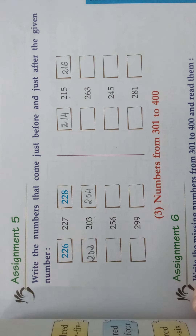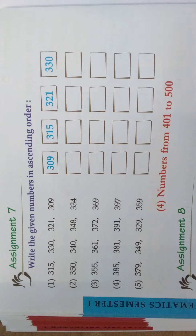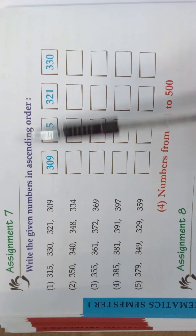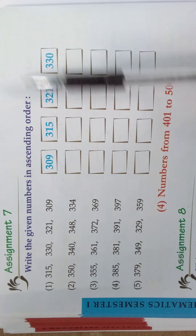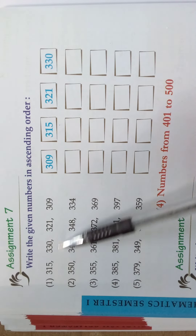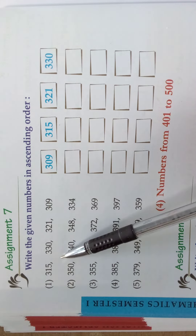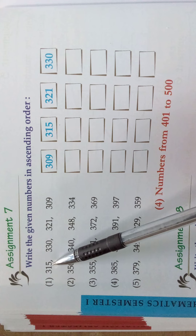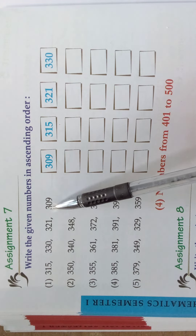In this way you should do the remaining sums. Come, children, we will do assignment 7. Read the question first: write the given numbers in ascending order. Ascending order means small to big number. Ascending order means we should write the numbers from small to big. See the numbers given here — take the first example sum. The numbers are: 315, 330, 321, 309.